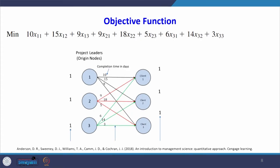The objective function is the total number of completion days to be minimized. Writing it out: 10x11 + 15x12 + 9x13 + 9x21 + 18x22 + 5x23 + 6x31 + 14x32 + 3x33. This is the complete objective function that has to be minimized.